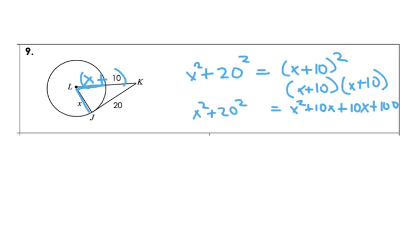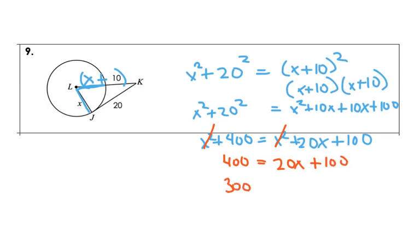So I'm going to combine like terms. I'm going to square the 20. You get x squared plus 400 equals x squared plus 20x plus 100. We're going to get rid of our x squared because they will cancel each other out and become 0. So I'm going to get 400 equals 20x plus 100. I subtract 100 to both sides. I get 300 equals 20x. I divide by 20 and x will equal 15.